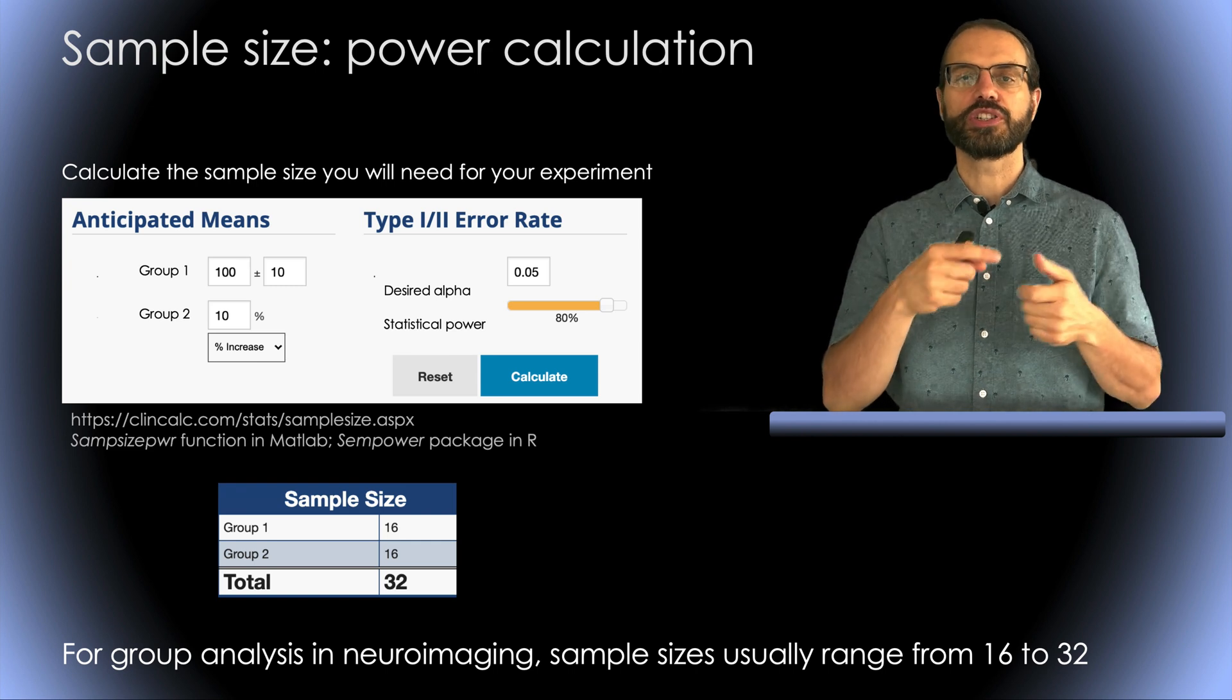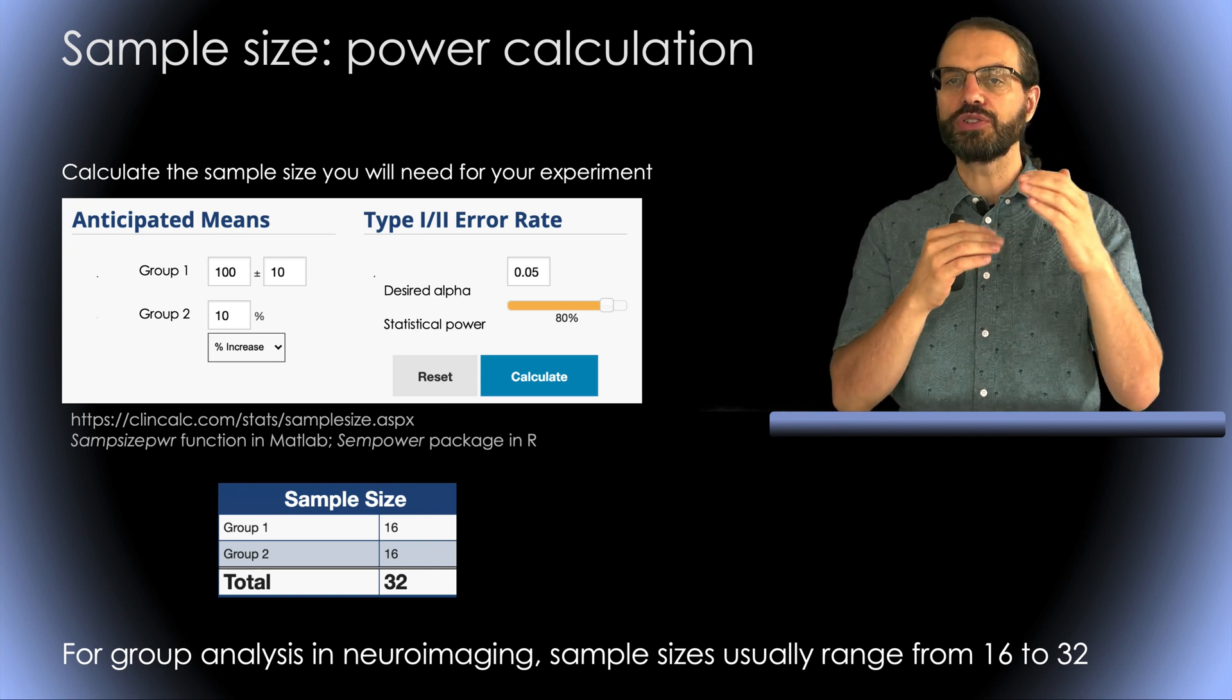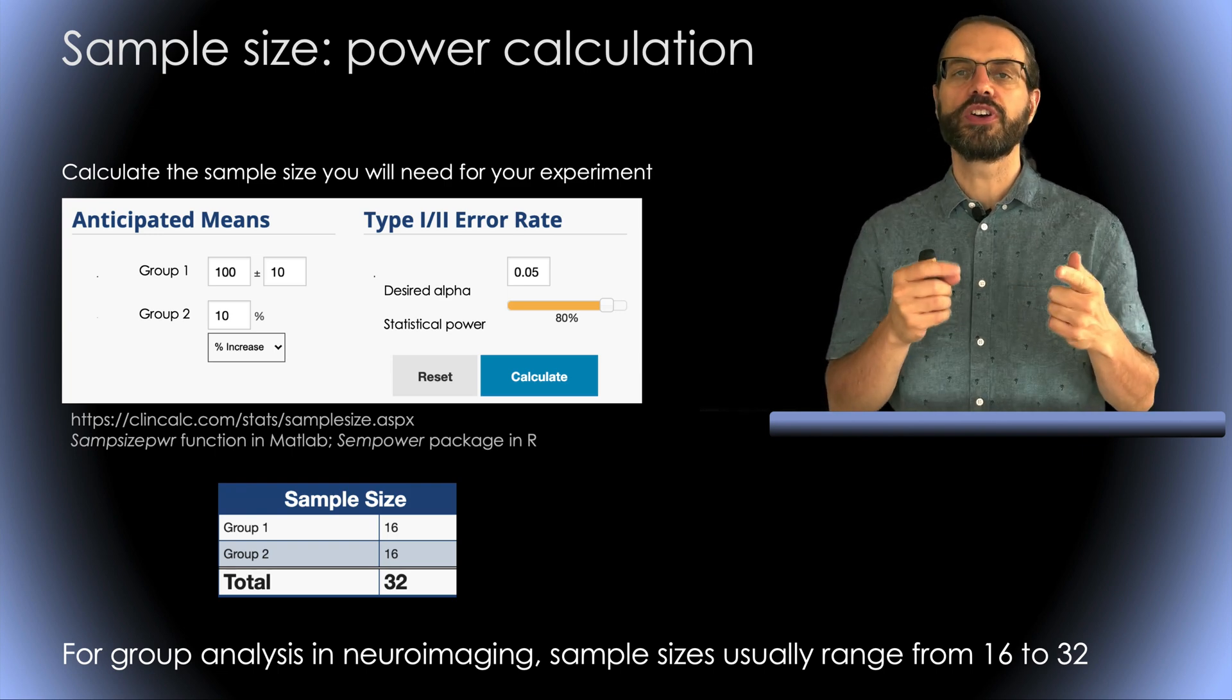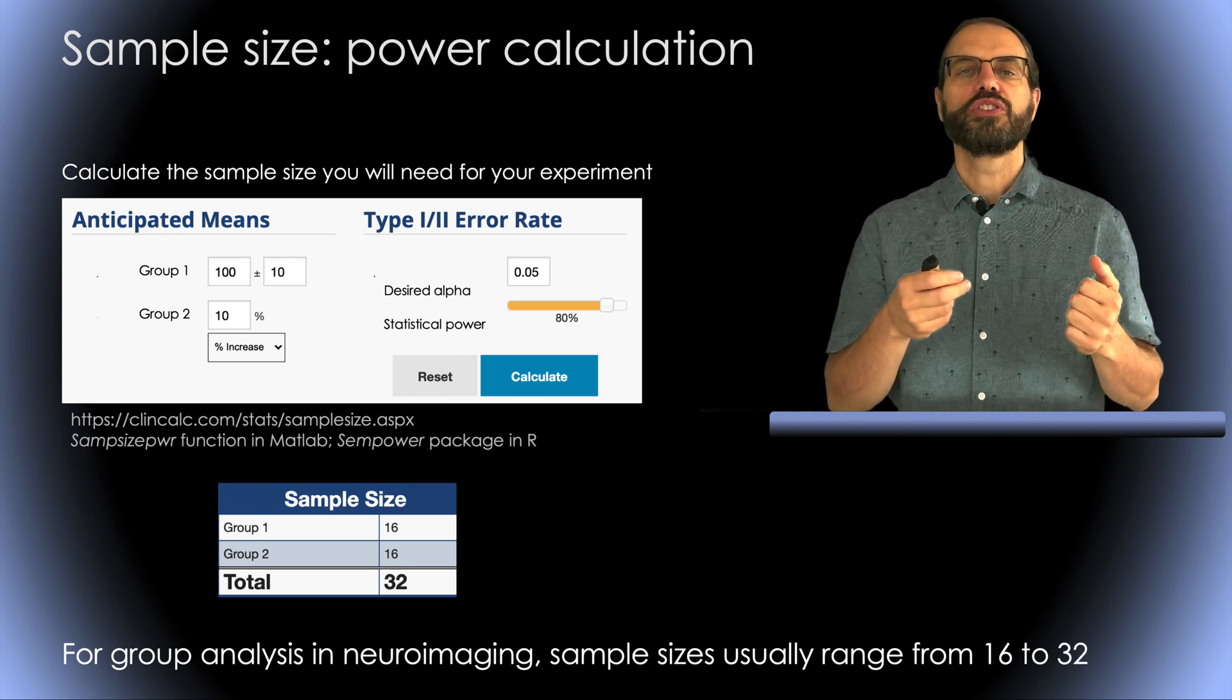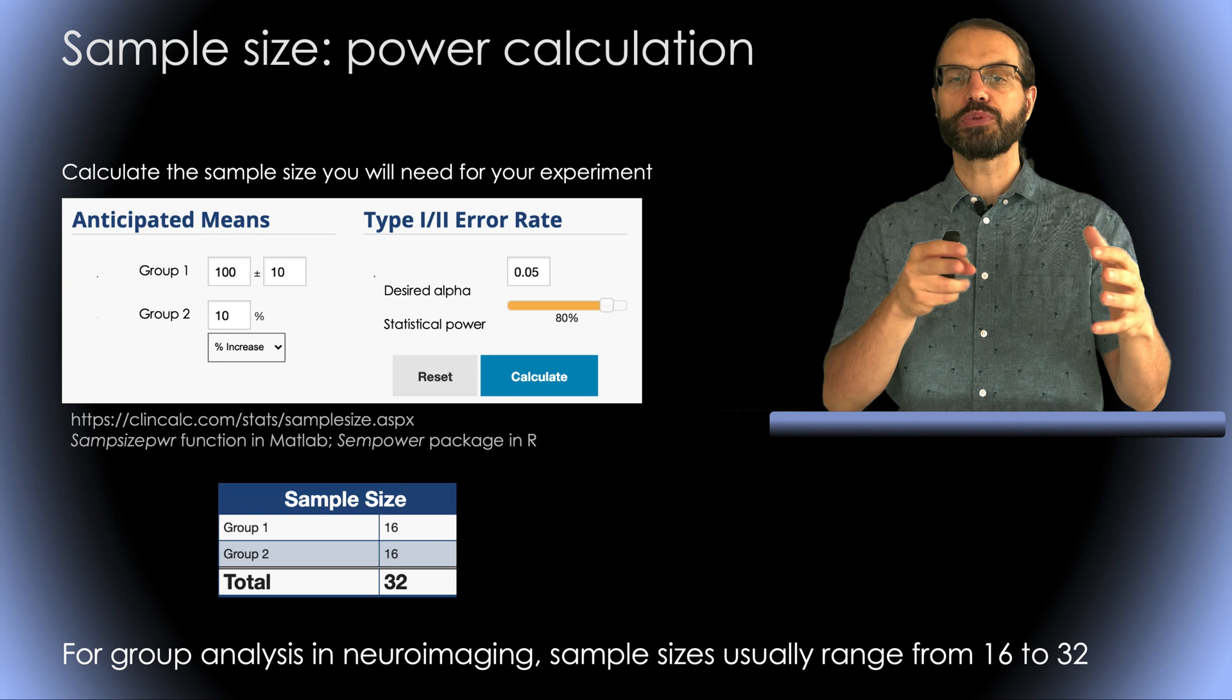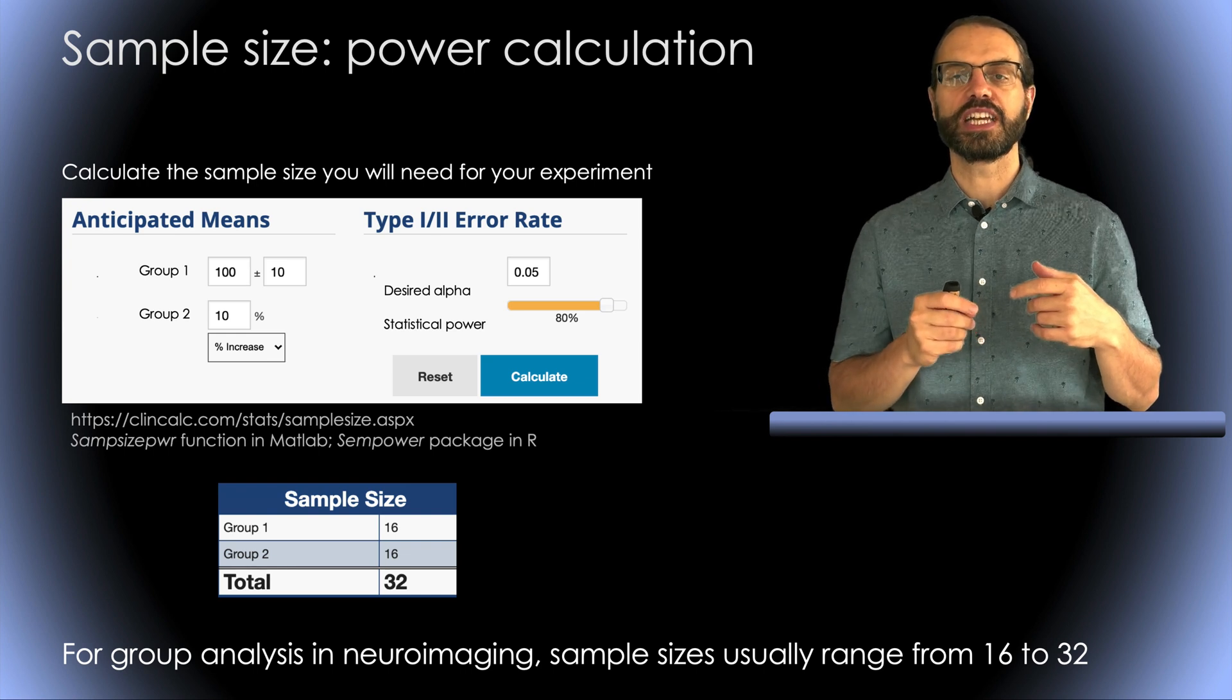So here, for example, I just found this website where you enter the group 1 mean and standard deviation. So this could be your ERP amplitude, for example. Then based on literature, you try to infer the minimum change you will want to be able to observe, so in this case, let's say 10% increase for your treatment group. You can also enter your maximum alpha value and minimum statistical power and the software will return the minimum sample size. There are also functions in MATLAB and R to do that, which I indicate here.